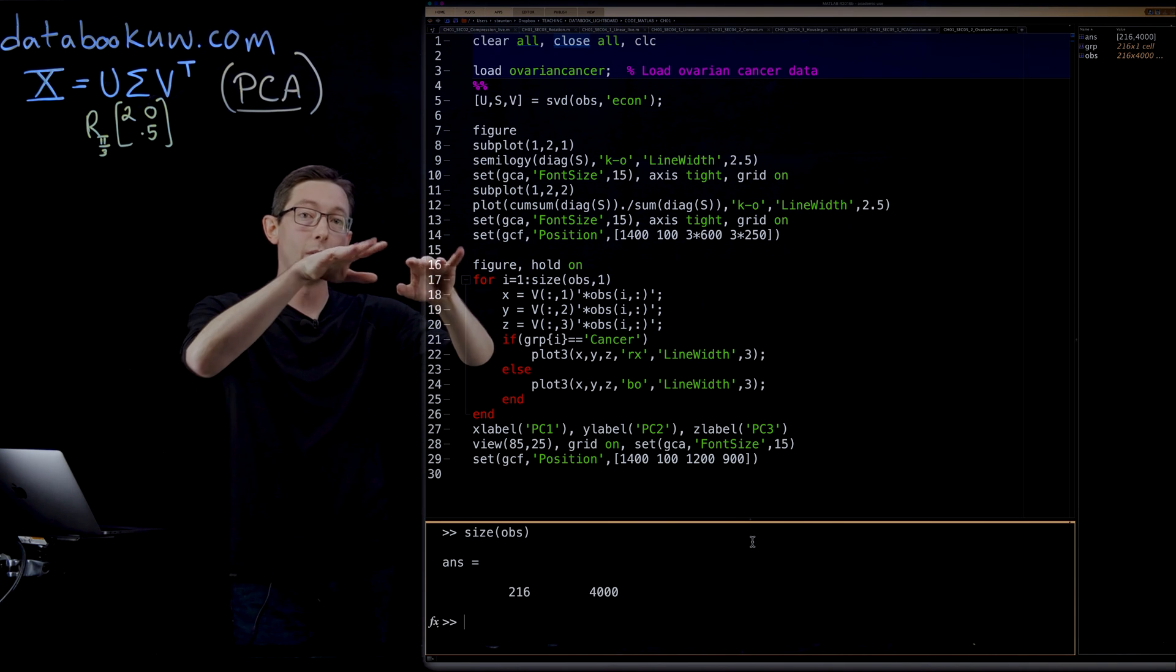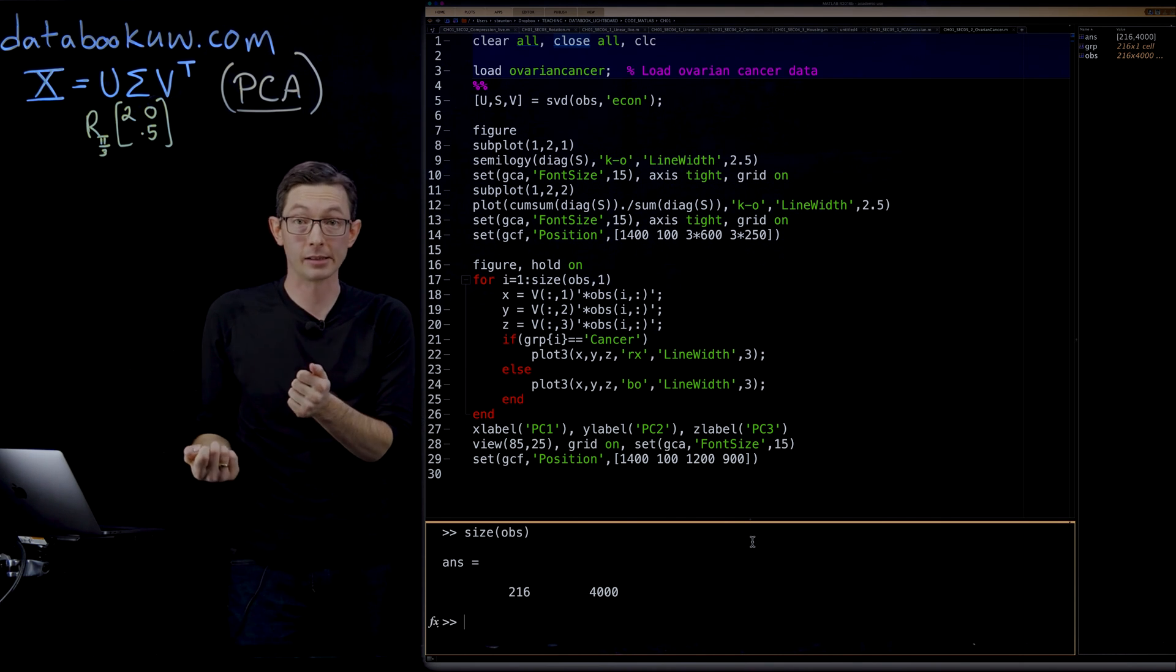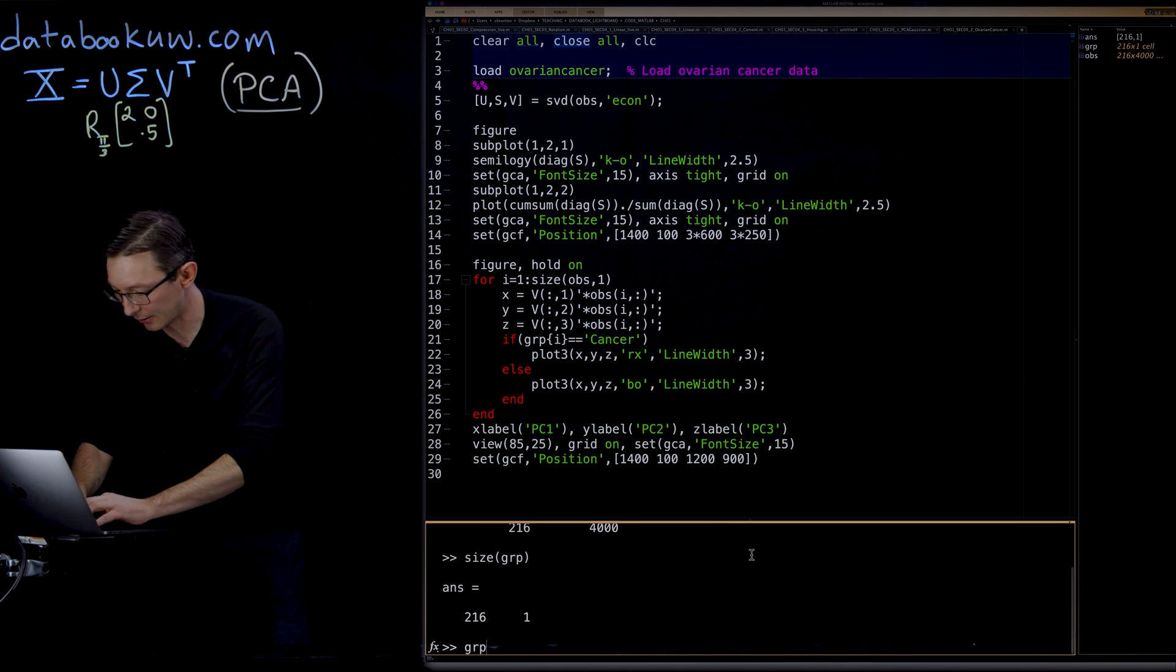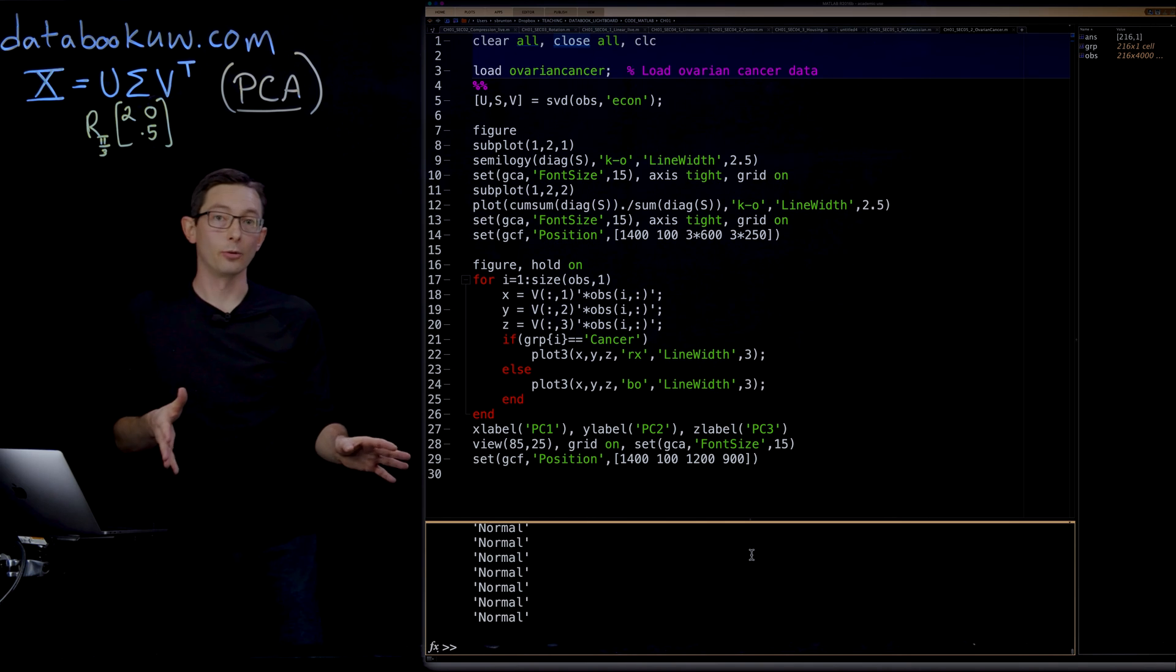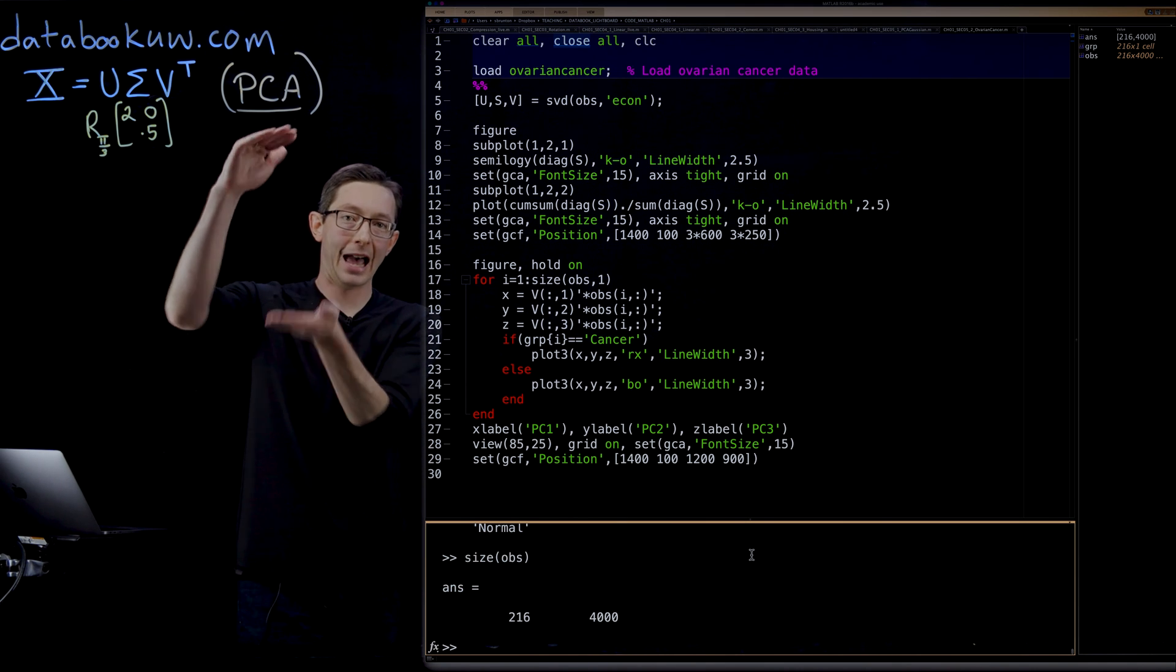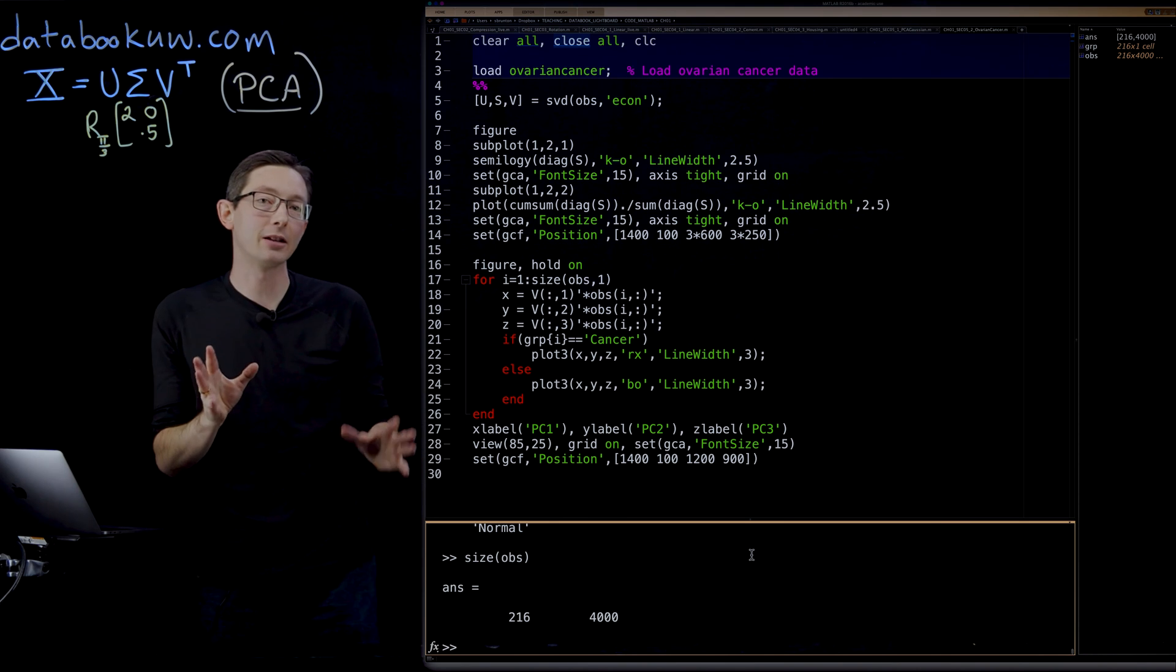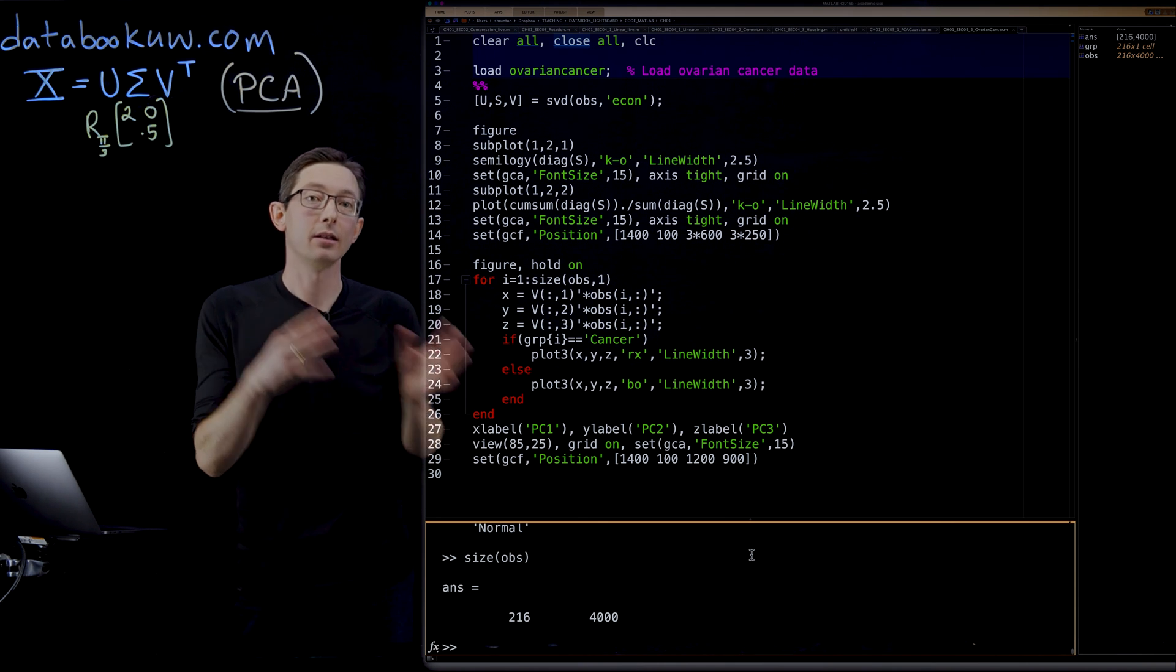We have a 216 by 4000 matrix. And what this corresponds to, there are 216 patients. And for each of those patients, they measure 4000 genetic markers. And what we're trying to do is figure out which genetic markers most correlate to whether or not those 216 individuals do or do not have ovarian cancer. And so this is actually a labeled data set. In this variable group, which is a 216 by 1 cell, this has information for each of the patients about whether or not they have cancer or are normal. So again, for each of those 216 patients, we have a label, half of them have cancer, half of them do not. And for each of those patients, we have 4000 genetic markers.